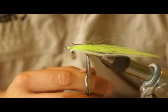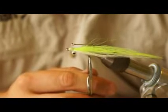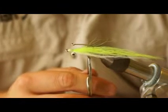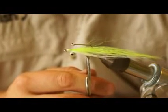Fish either on a floating line or using one of the Rio Aqualux striped bass intermediate lines, this fly kills bass left, right and center. Really easy pattern to tie, only going to need a couple of materials.